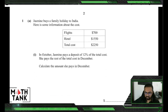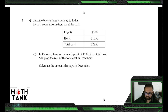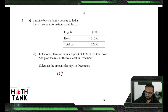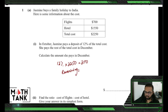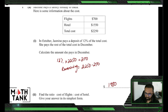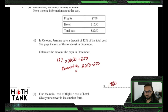Jasmine buys a family holiday in India. She pays a deposit of 12 percent of the total cost in October and the rest in December. Calculate the amount she pays in December. First calculate 12 percent of the total cost using a calculator, which gives $270. The remaining amount is 88 percent. Find the ratio of cost of flights to cost of hotel — flights cost $700 and hotel costs $1,550.